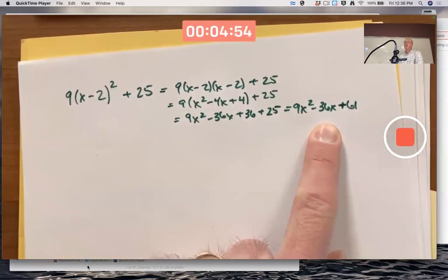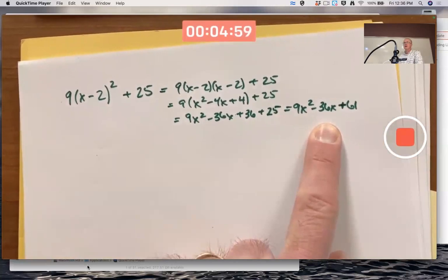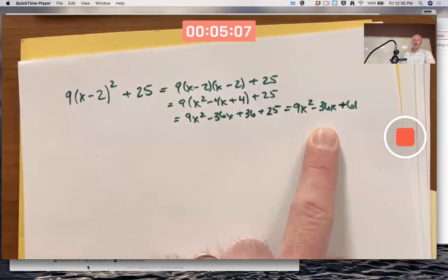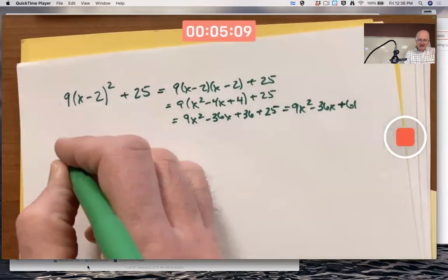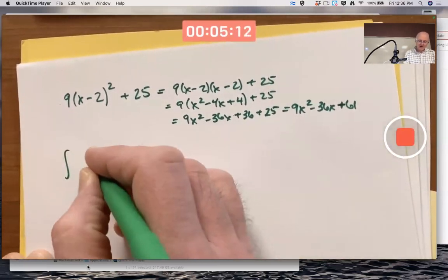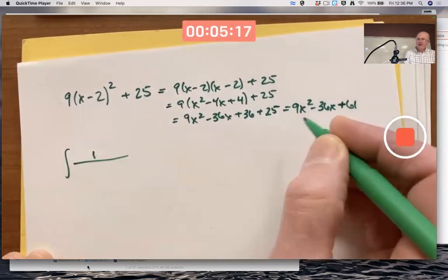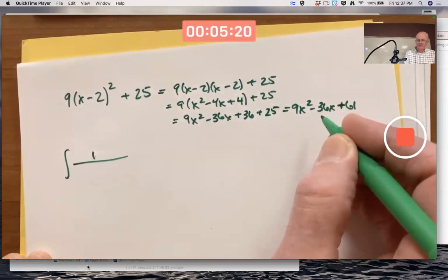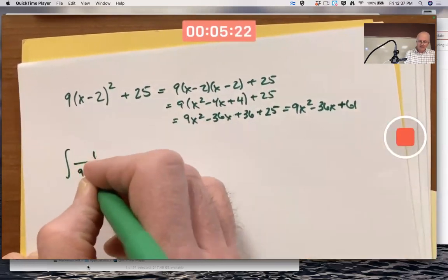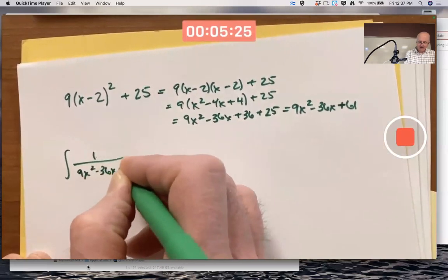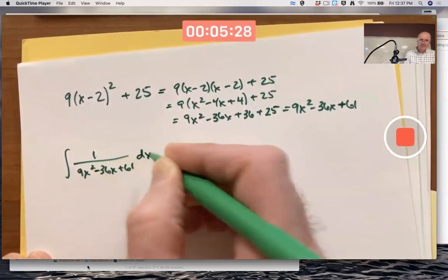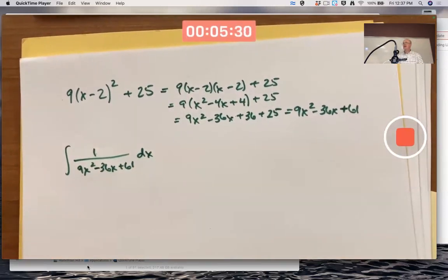If you tried the quadratic formula, you would get a square root of a negative number. And that would tell you it has no real roots. Why did I do this? Because I would now like to write an integral of a rational function. I'll make the numerator simple, 1. I'll make the denominator equal to this quadratic in standard form: 9x² - 36x + 61.